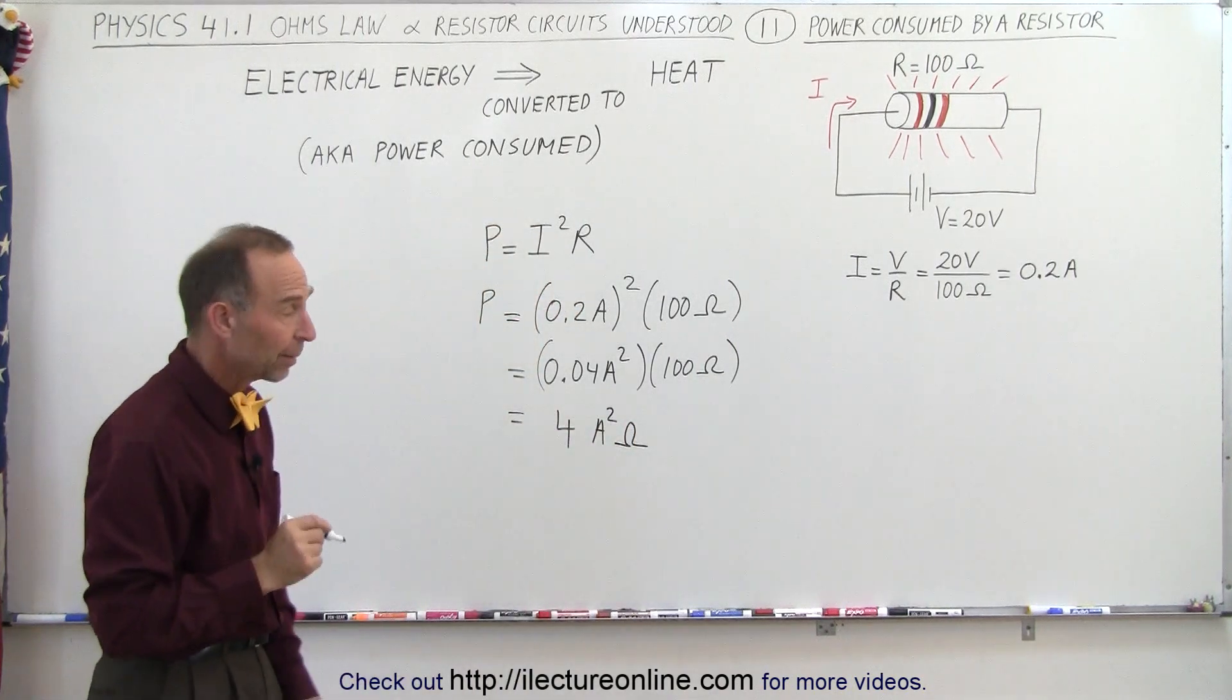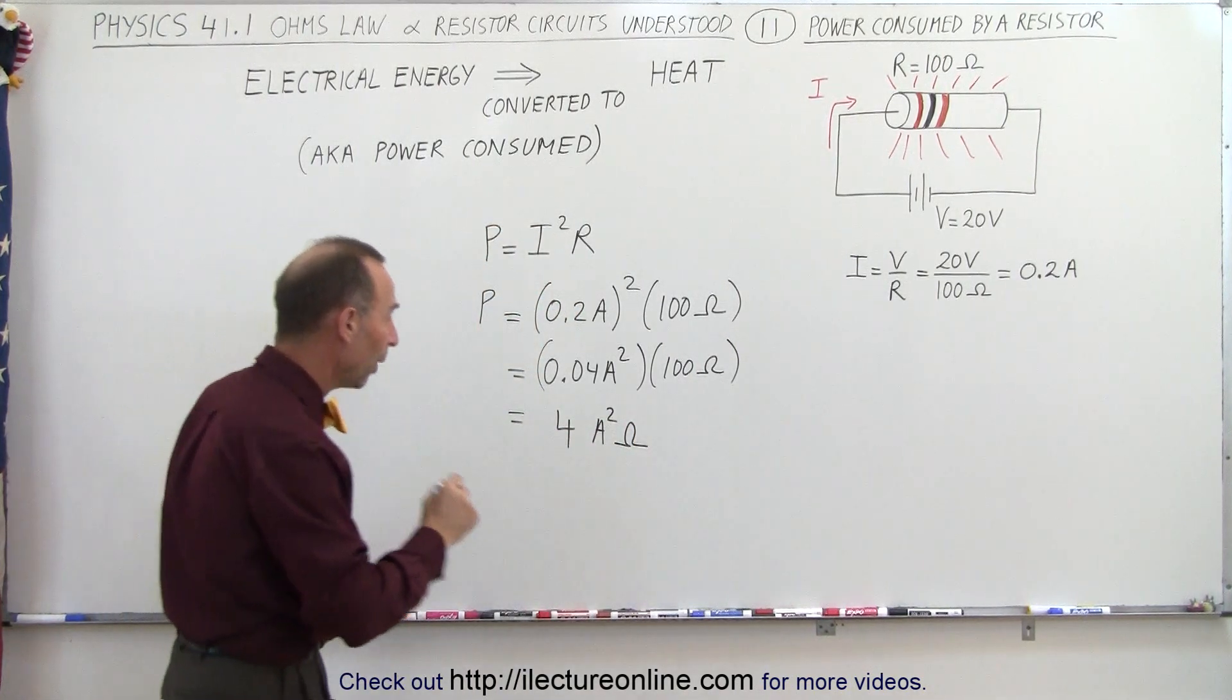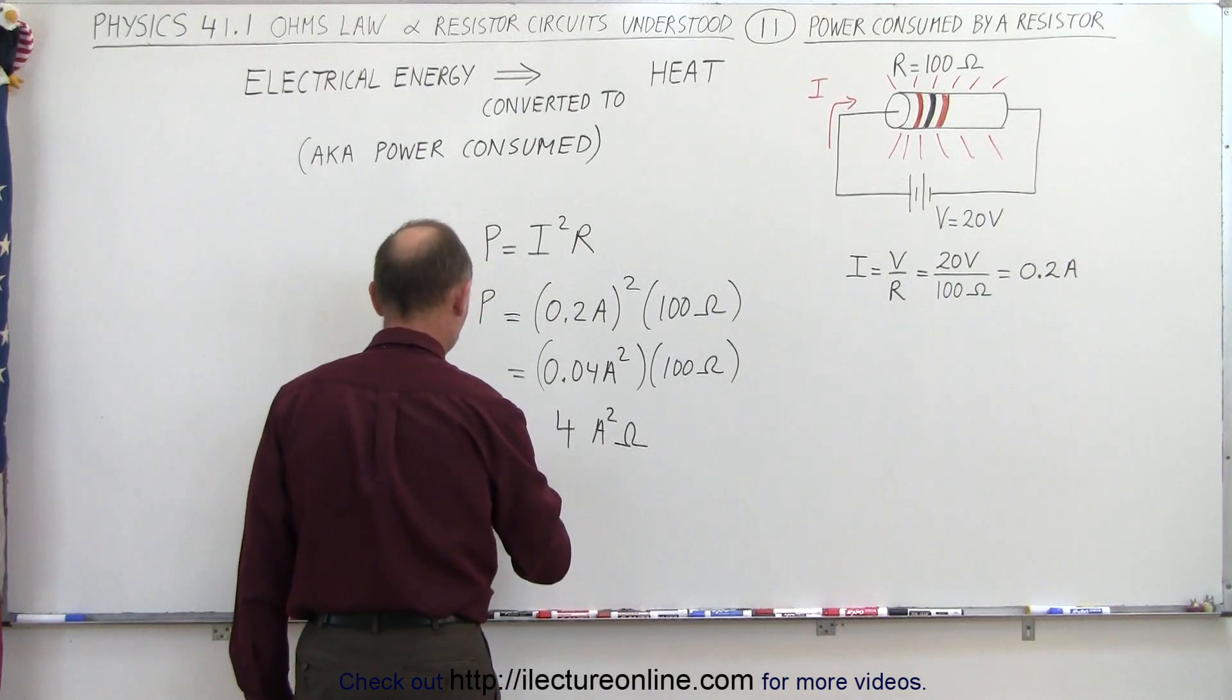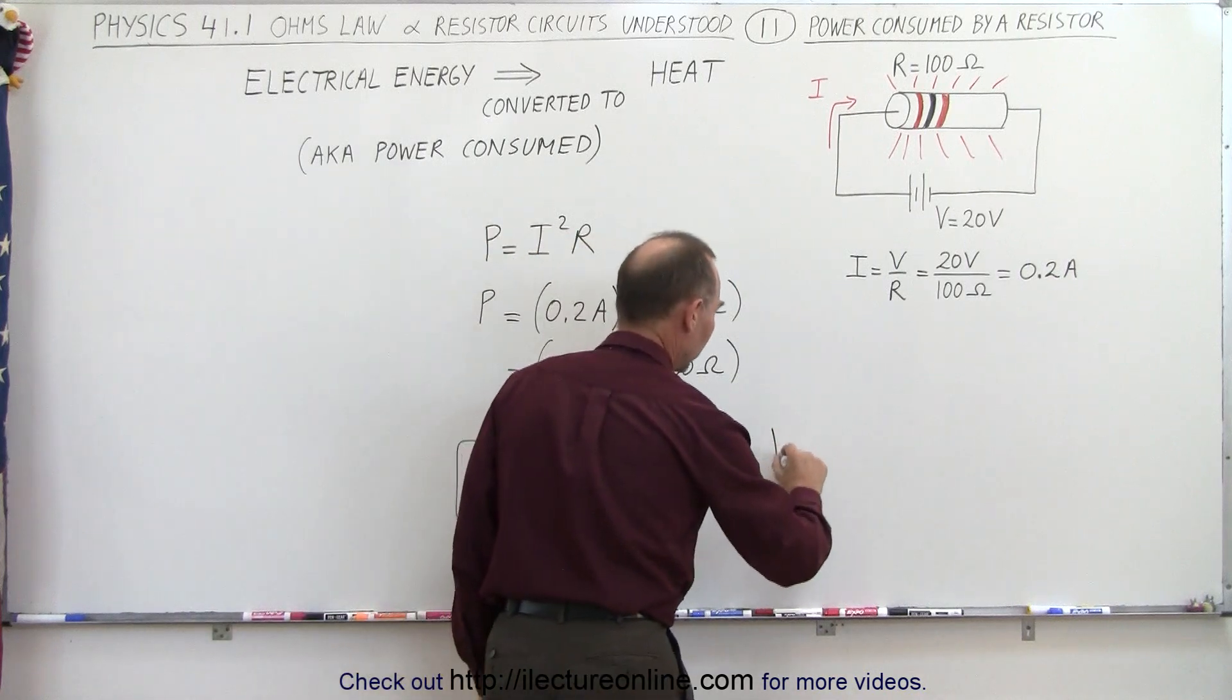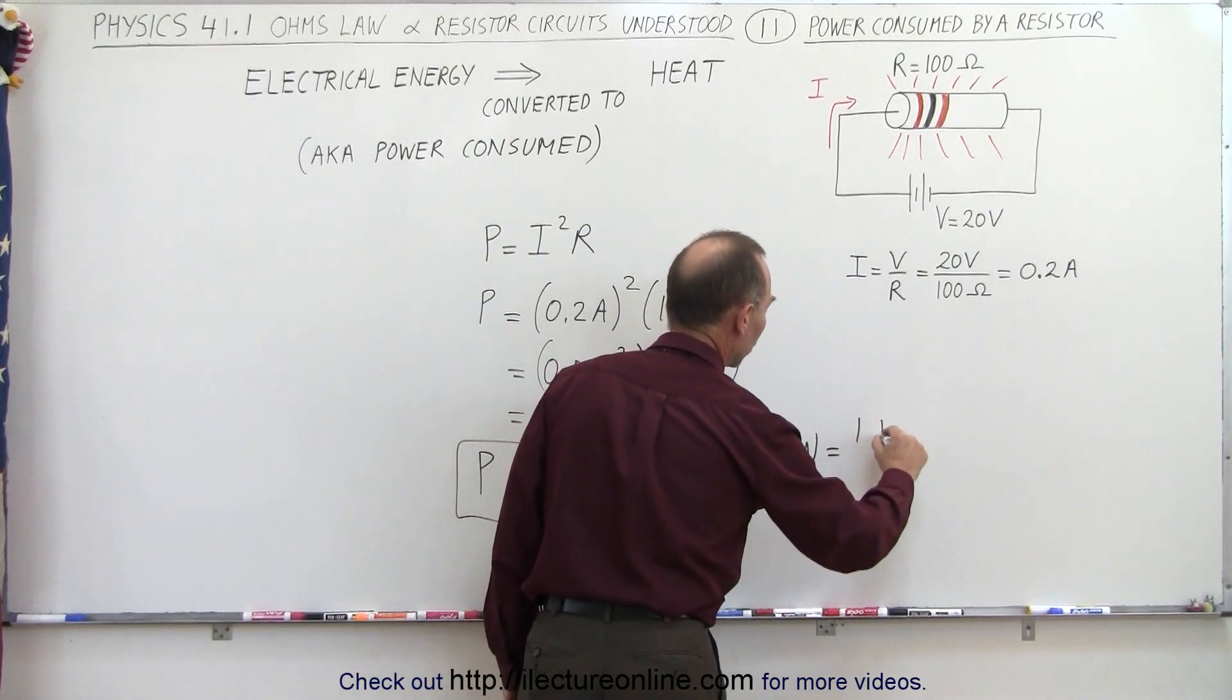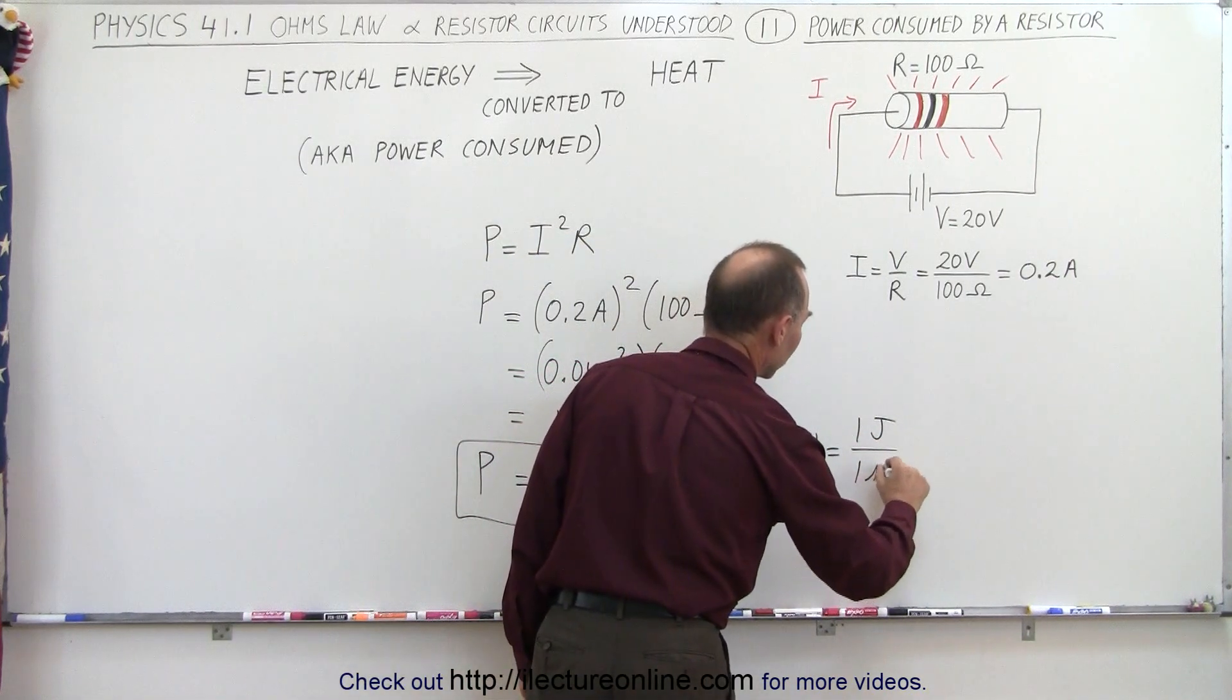Now it turns out that Amps squared times Ohms is equal to watts. So this can be written as the power is equal to 4 watts, and watts by definition, 1 watt, is equal to 1 joule per 1 second.